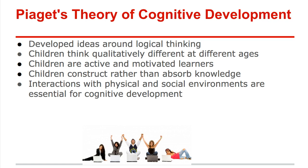I want to establish a couple of elements from Piaget's work. One thing Piaget states is that ideas are developed around logical thinking — our brains like to operate logically, and things that make sense are what we generally agree with and focus on. Through this theory of cognitive development, we understand that children think qualitatively differently at different ages, which connects back to how our brains mature over time. We also understand that individuals are, for the most part, active and motivated learners — we learn better when we are motivated and excited.